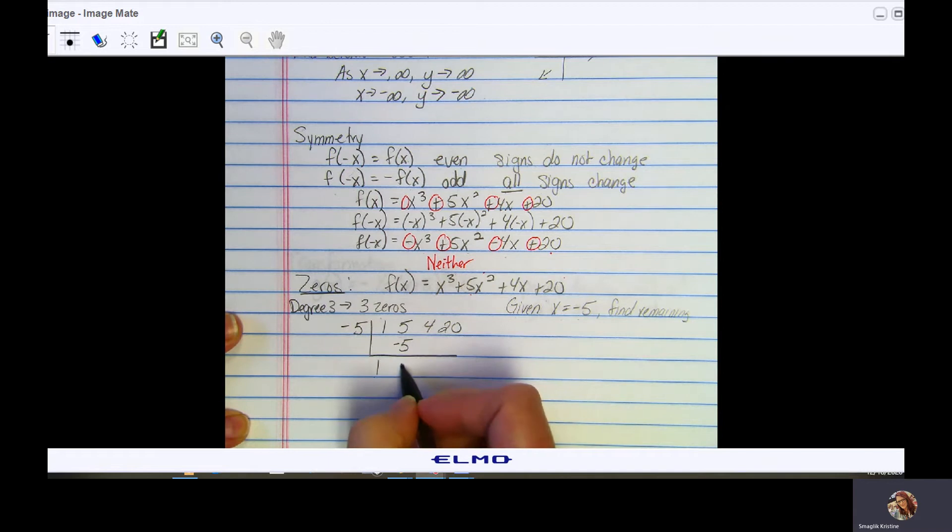Drop down the 1. Negative 5 times 1 is negative 5. Add to get 0. Negative 5 times 0 is 0. Bring down the 4. 4 plus what was 0 is 4. Negative 5 times 4 is negative 20. Now we add these, we get 0. And we should get a 0 - this is your remainder.